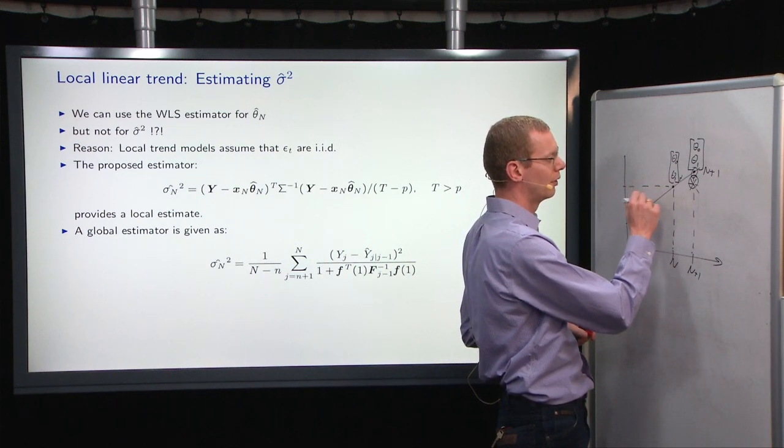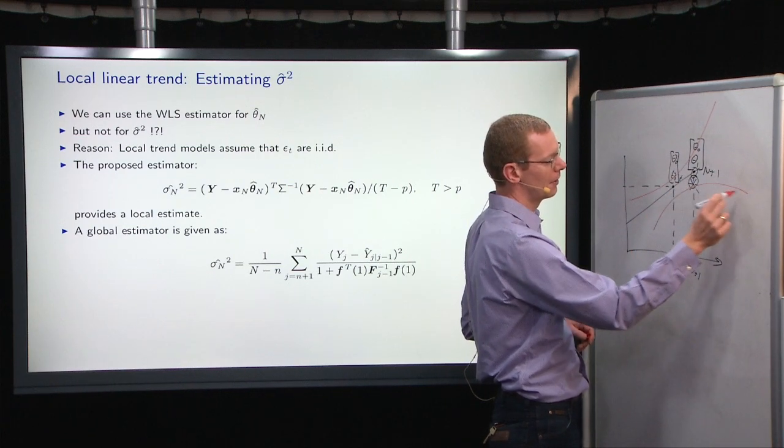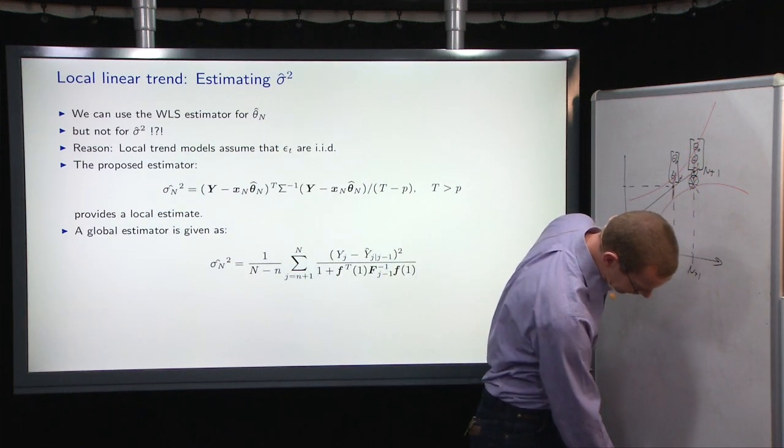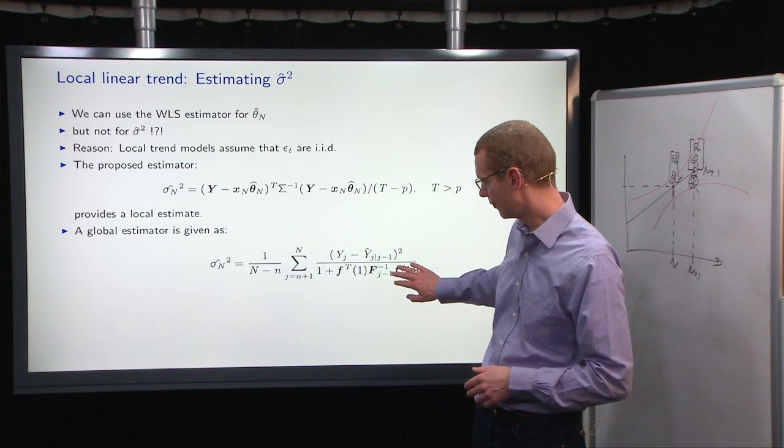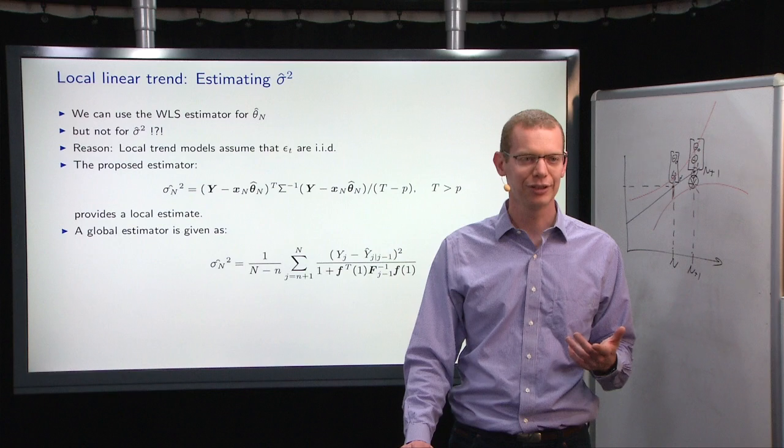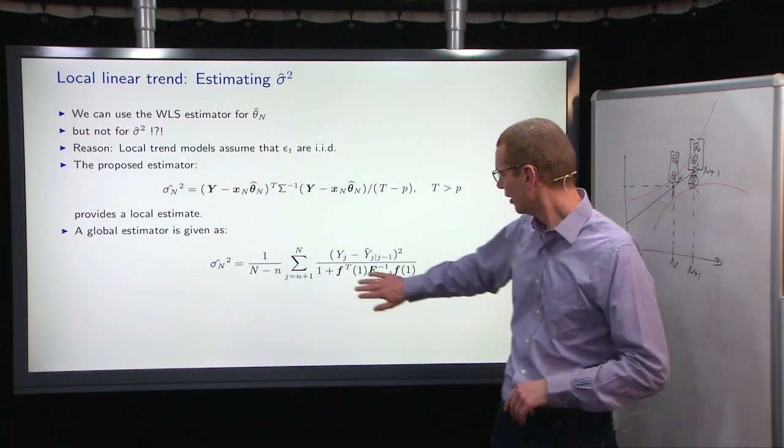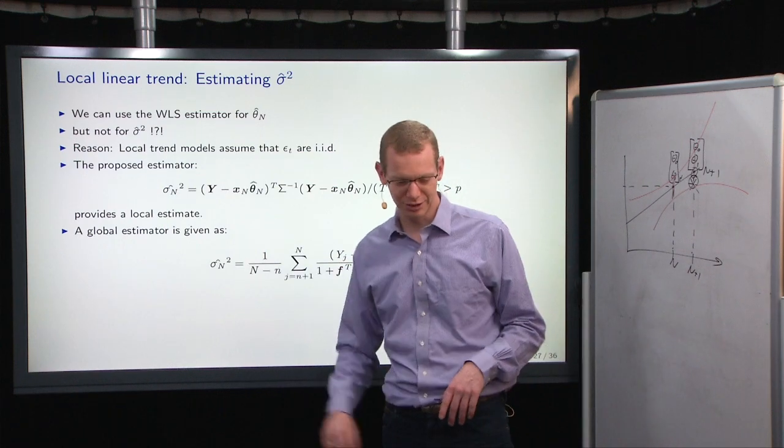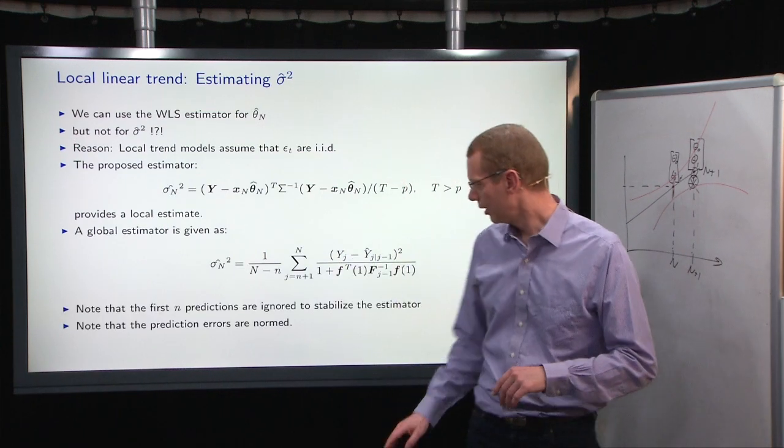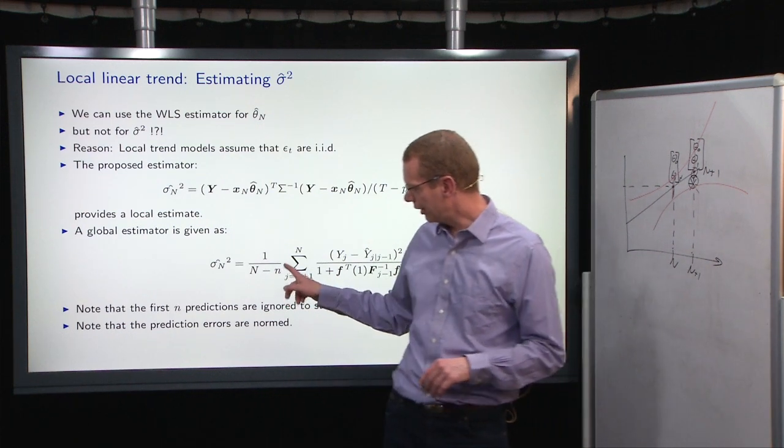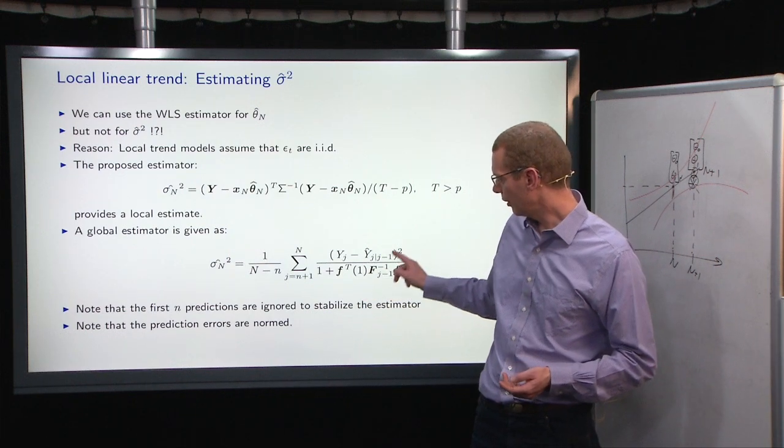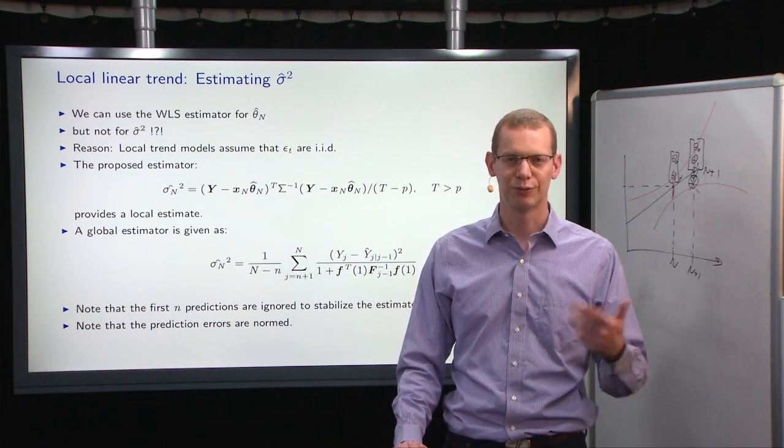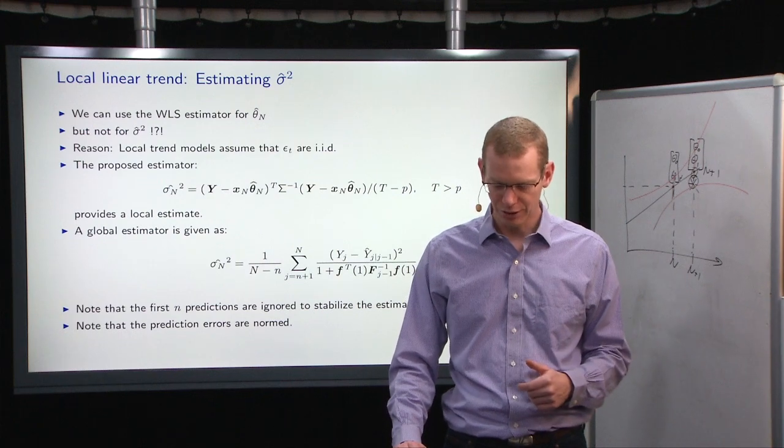Prediction intervals becomes, the further you go out, the wider they become. So the variance at time n is smaller than the variance at time n plus 1. And that should be taken into account, which is what is done down here. In a moment, I will illustrate this with an example, but that's just to underline. What I will try to do is I will ignore what is the denominator in this equation and see what happens to the estimated sigma when we do it like this. And just again to repeat, the first n observations of prediction errors, they are ignored to stabilize the estimator. And we do norm the prediction errors with the relative variance inflation due to the prediction horizon.